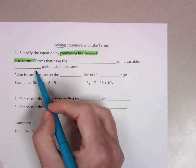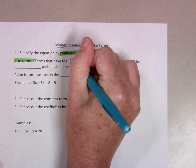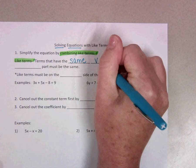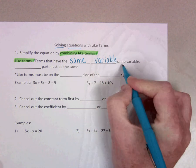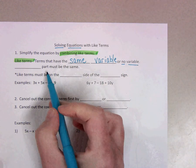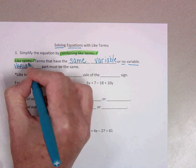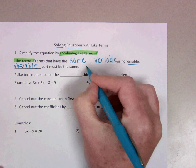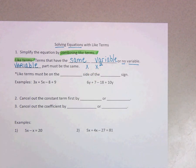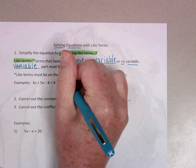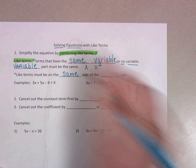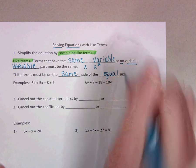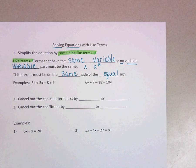So let's talk about what like terms are. Like terms are terms that have the same variable, or they have no variable, and the variable part must be the same. For example, if you have x and you have x squared, those would not be like terms because they do not have the same variable part. Like terms must be on the same side of the equal sign.